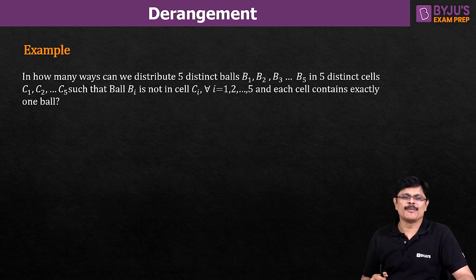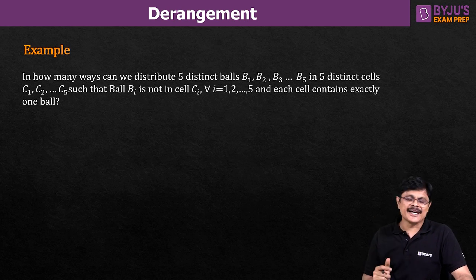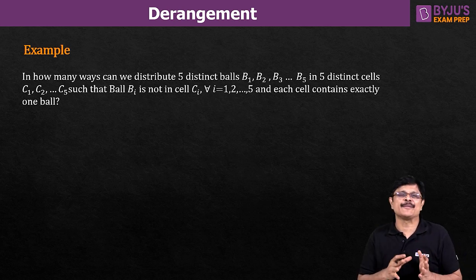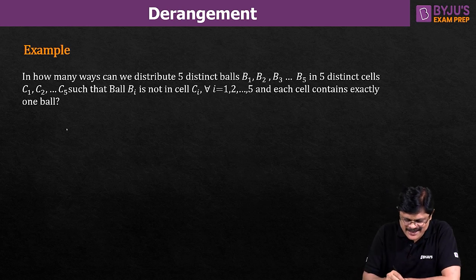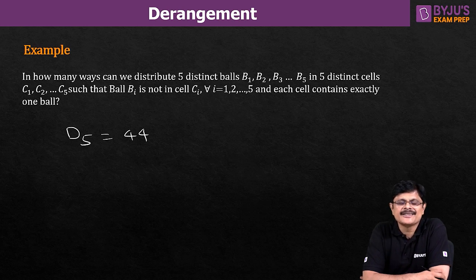Now let us come back to the problem we were discussing. We need the number of ways to distribute 5 distinct balls B1 through B5 in 5 distinct cells such that Bi cannot be placed in Ci and each cell contains exactly one ball. This is the same as the number of derangements — no ball should take its natural position. So the answer is d5, which equals 44. If you know the concept of derangement, this problem is very simple; otherwise it is very complicated.